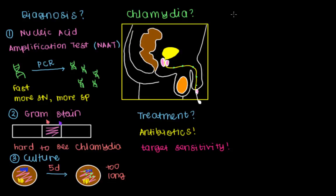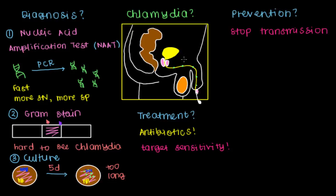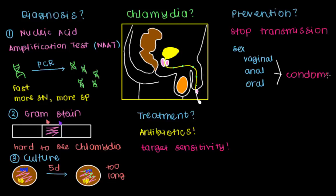Finally, maybe we can catch a person before they get chlamydia. What can we do to help people prevent having the disease in the first place? With any infectious disease, the way to do that is to stop transmission — stop the spreading of chlamydia from one infected person to another. Chlamydia can be transmitted mainly through vaginal, anal, and oral sex. For all three, we can prevent transmission by using condoms, decreasing direct contact between infected and uninfected persons. Specifically for oral sex, dental dams can also be used with the same concept of decreasing direct contact.